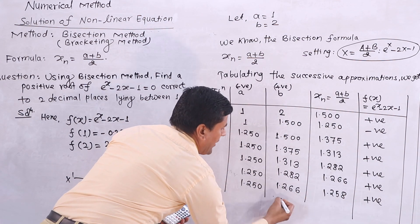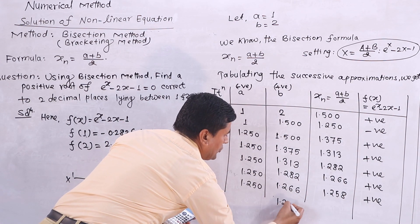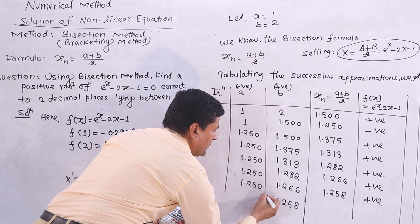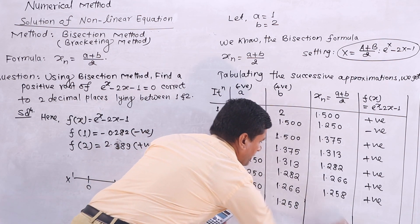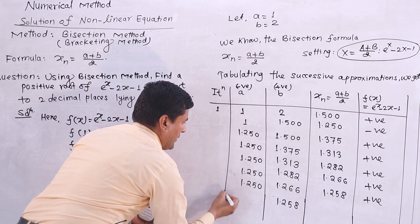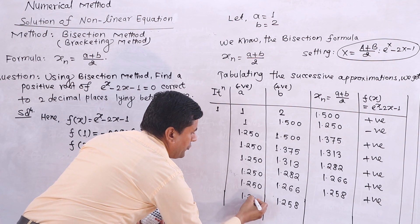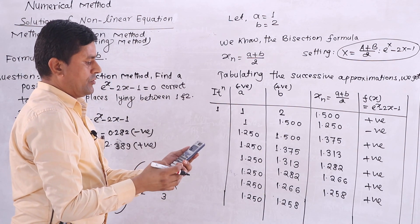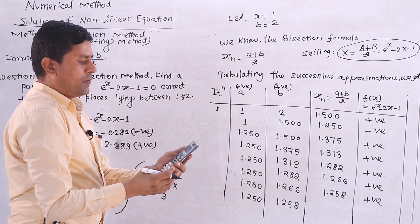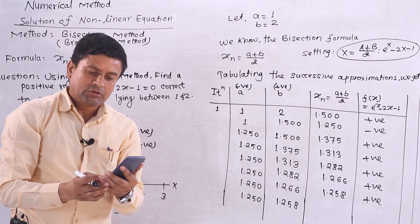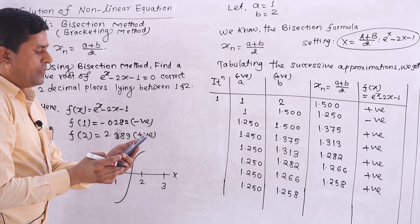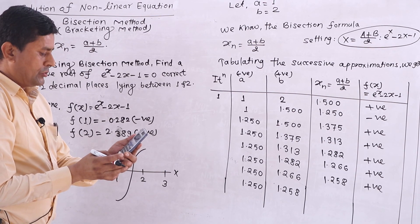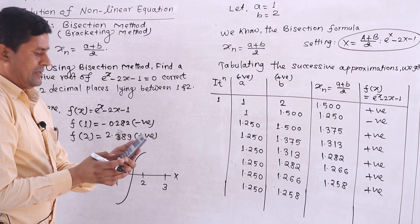Continuing: x_n = 1.258. Updating the bounds and recalculating. The average gives x_n = 1.258. The values are converging steadily toward the root.